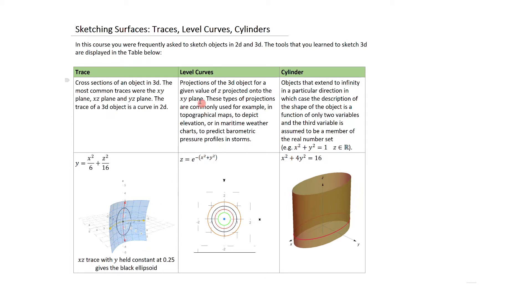A level curve is a projection of a 3D object for a given value of Z onto the XY plane. These projections are commonly used in topographical maps to depict elevation, or in maritime weather charts to predict barometric pressure profiles in storms.